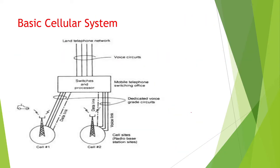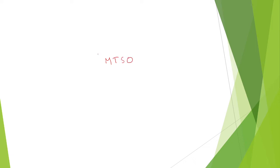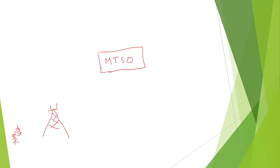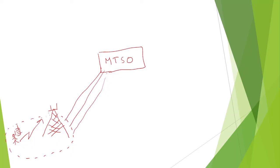Here you can see this is cell site one and this is cell site two, and this is an MTSO — mobile telephone switching office. So here a user with a mobile unit wants to make a call. When the user initiates a call, it is first received by the nearest cell site within the coverage area. The signal is received by the cell site.